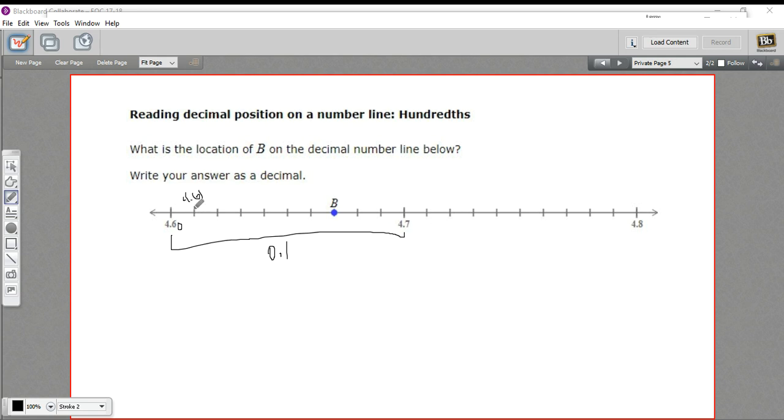So all we really have to do is count here. 1, 2, 3, 4, 5, 6, 7. So this is 4.67. So 4.67 on this decimal number line.